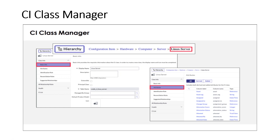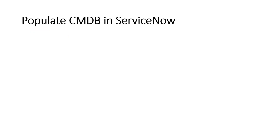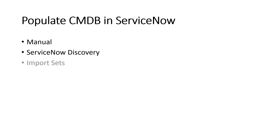So CI Class Manager, CI Query Builder, and CI Dashboard are covered. Now let's look at the different ways to populate CMDB in ServiceNow. First is manual — you can create configuration items manually, as I showed last session with the Windows Server. Second is ServiceNow Discovery, which I'll explain shortly. Third is Import Sets — using the transform map and staging table to import configuration item data, which I've covered in a previous video on ServiceNow Import Sets.